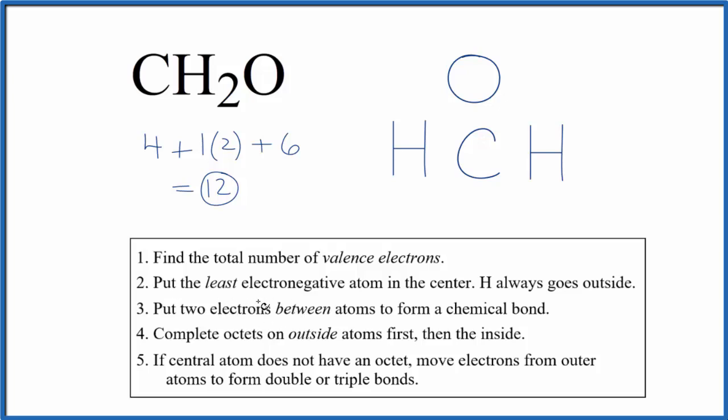Next, we'll put a pair of electrons between the atoms. That's going to form the chemical bond. So let's put two here. So we've formed our chemical bonds. So far we've used two, four, six. We have twelve.